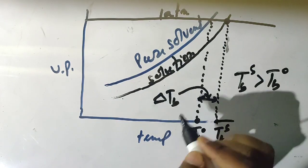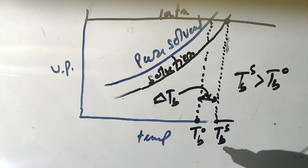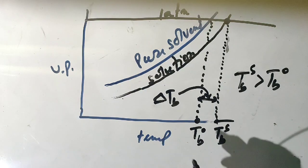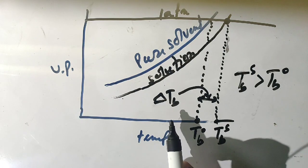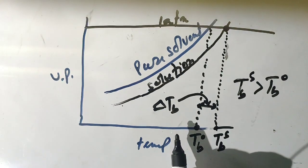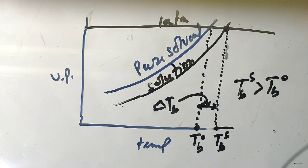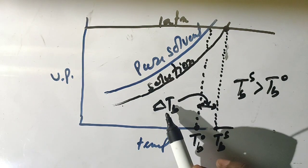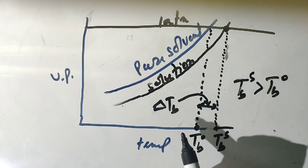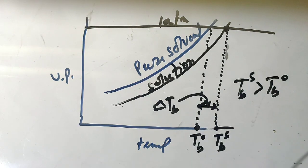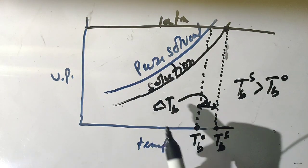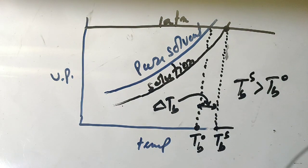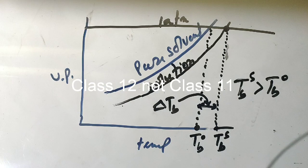This difference in boiling point is represented by delta Tb, which is the elevation of boiling point. The lecture on elevation of boiling point will be explained in the next lecture. For today I am finishing this video, and in the next lecture I am going to explain delta Tb, which is the elevation of boiling point.